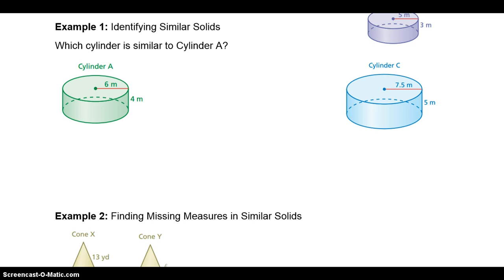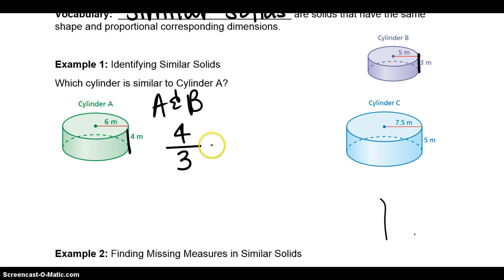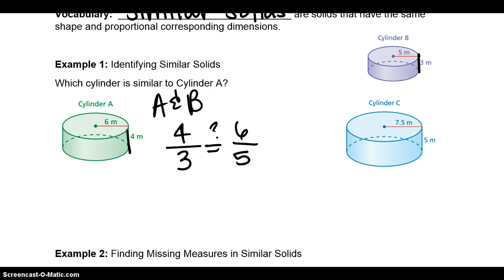In example 1, we identify similar solids and determine which one is similar to cylinder A. Starting with A and B: the height of A is 4 and the height of B is 3. Is that proportional to the radius of A, which is 6, and the radius of B, which is 5? Using cross products: 6 times 3 is 18, and 5 times 4 is 20. These are not equivalent, therefore A is not similar to B.